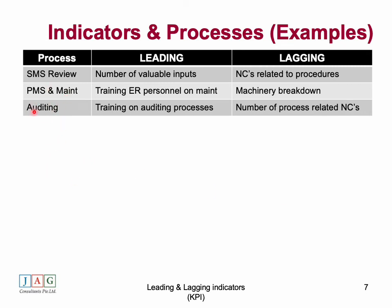Looking at some process-specific examples: for SMS review, the number of valuable inputs is a leading indicator, while non-conformities related to a procedure or process is a lagging indicator. For PMS and maintenance, training engine room personnel on maintenance is a leading indicator, and machinery breakdown is a lagging indicator. For auditing, training auditors on auditing processes is a leading indicator, and the number of process-related non-conformities that add value is the lagging indicator.